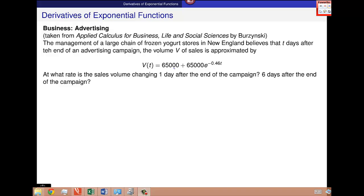We want to talk about derivatives of exponential functions. This one is taken from your textbook and says the management of a large chain of frozen yogurt stores in New England believes that t days after the end of an advertising campaign, the volume of sales is approximated by V(t) = 65,000 + 65,000e^(-0.46t). At what rate is the sales volume changing one day after the end of the campaign? And what about six days after the end of the campaign?